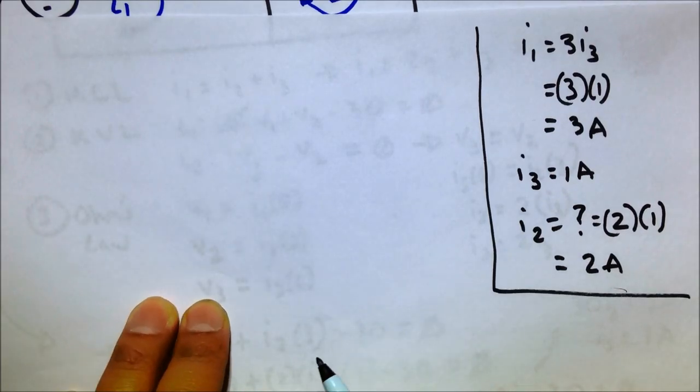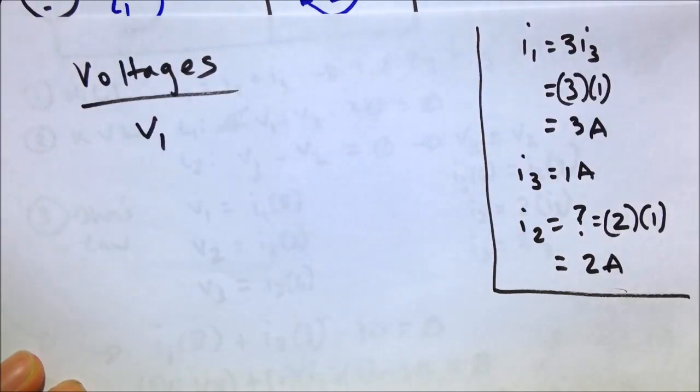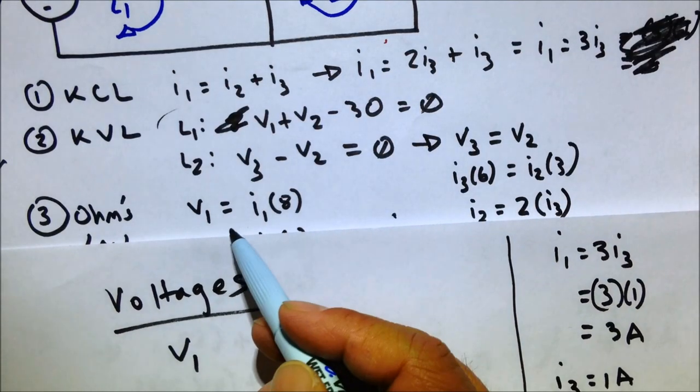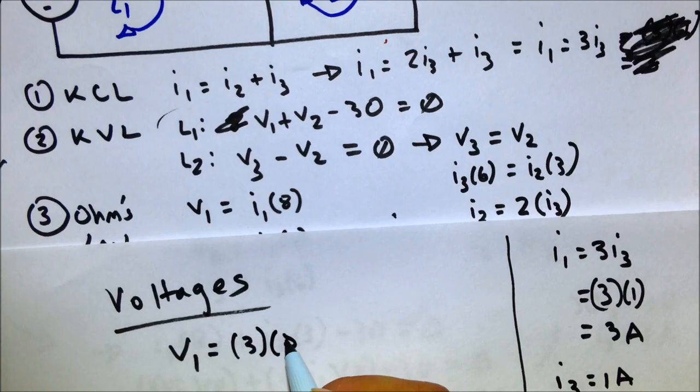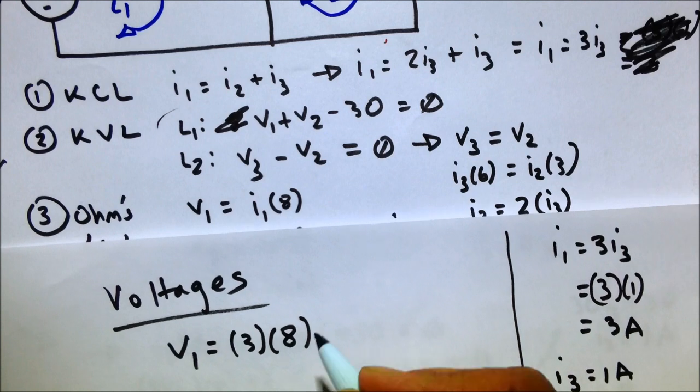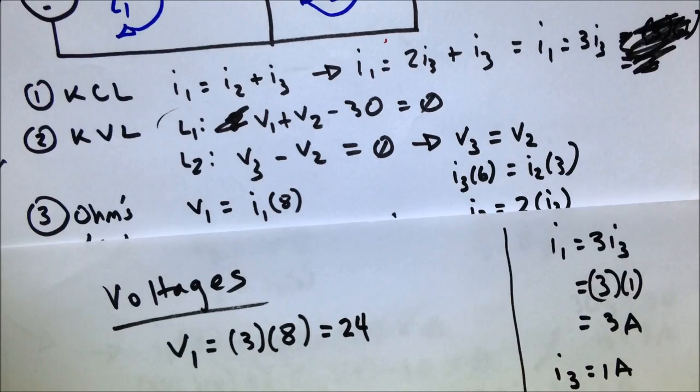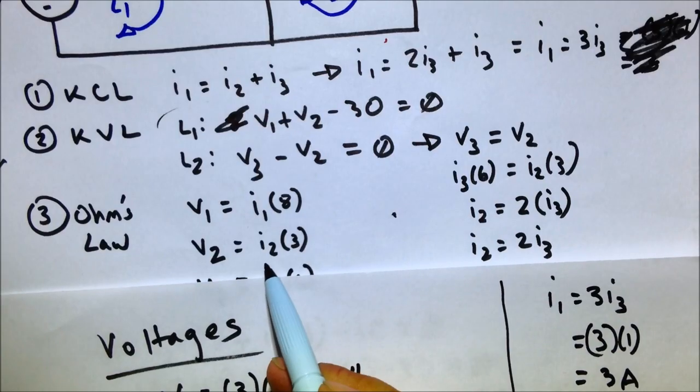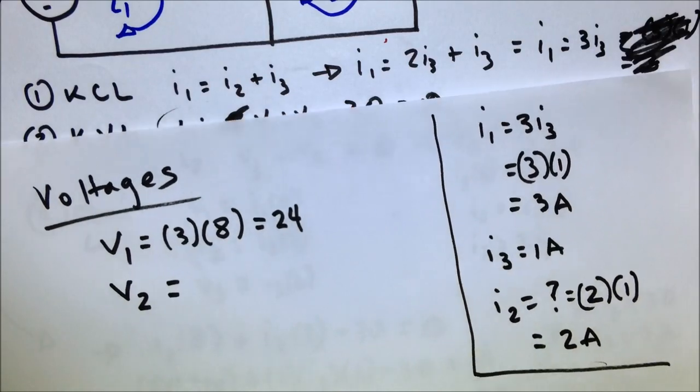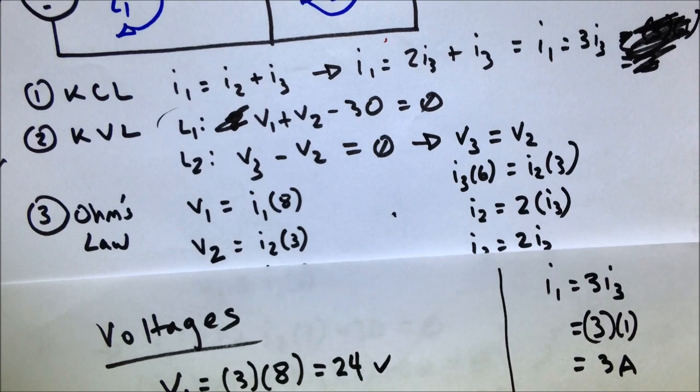And now we can use Ohm's law to solve for our voltages. Voltages. So V1, well we know V1 equals I1 times 8. So I1 we know is 3 amps times 8. 3 amps, we just solve for it. That means the first voltage is 24 volts. That's kind of high. V2, using Ohm's law, right there, is I2 which we just solved for as being 2 amps, so 2 amps times 3, that is 6. Let's make sure there's some units in here. 6 volts.